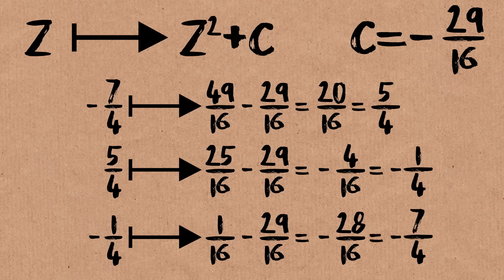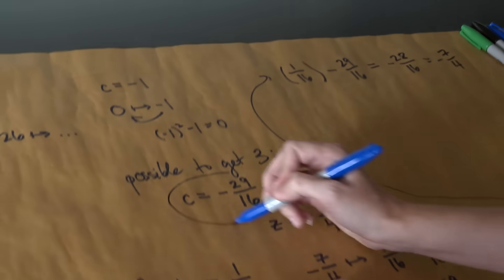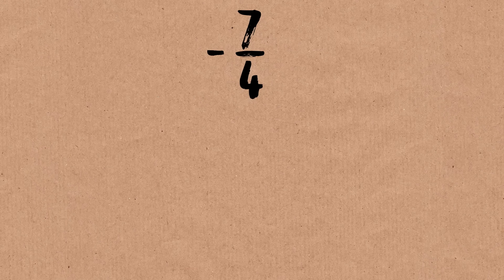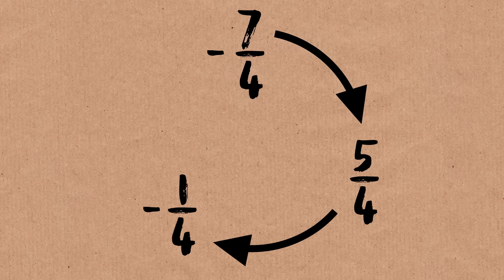hey, okay, good. Really is minus 7 quarters. Where you started. Where I started. So for this particular value of c, we can have three fractions when we iterate. Minus 7 quarters goes to 5 quarters goes to minus 1 quarter, which takes us back where we started.